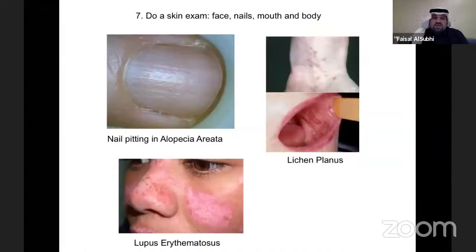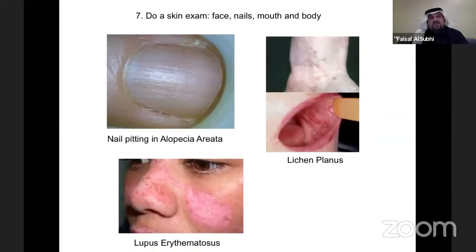Lastly, do a skin exam: look at the face, nails, and mouth. If the patient has alopecia areata, examine the nails — if they have pitting, that's a poor prognostic factor, meaning this patient may be difficult to treat and may need systemic treatment in the future. If you see signs of another dermatological condition, such as lichen planus in the mouth or skin, you can suspect lichen planopilaris as well. Lupus can also sometimes present with hair loss — both scarring and non-scarring.